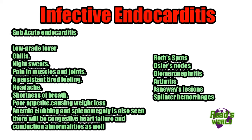Physical findings include Roth spots — also known as Litten spots — which are red spots with pale centers on the retina. There will be Osler nodes on the pulp of the digits, glomerulonephritis, arthritis, Janeway lesions which are painless lesions on the palms and feet, and splinter hemorrhages seen on the fingernails.